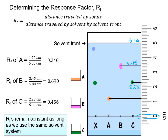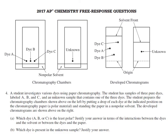RF factors are useful because that ratio remains constant as long as you use the same solvent system. Here is the AP free response question: a student investigates various dyes using paper chromatography. The student has samples of three pure dyes A, B, and C, and an unknown sample that contains one of the three dyes. A drop of each dye is placed on the chromatography paper, which is polar, and a non-polar solvent is used. The developed chromatograms are shown on the right.